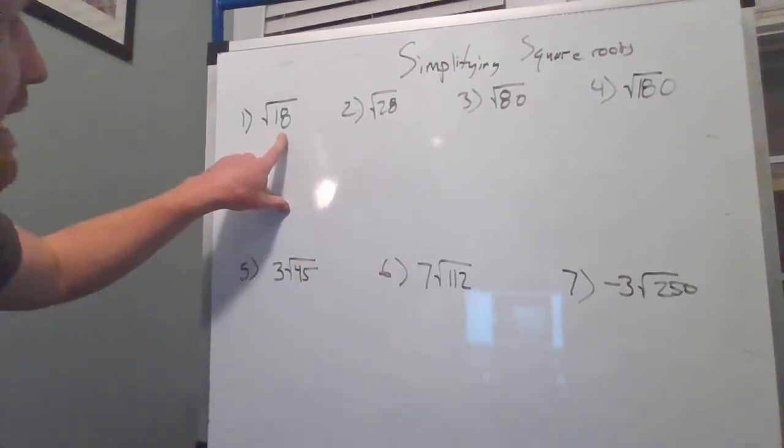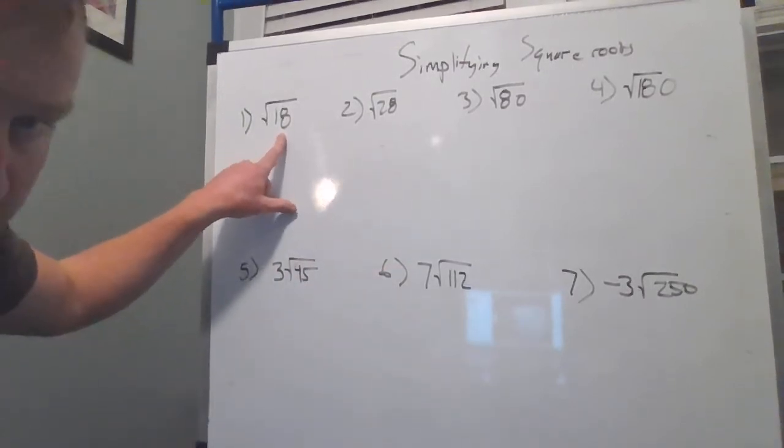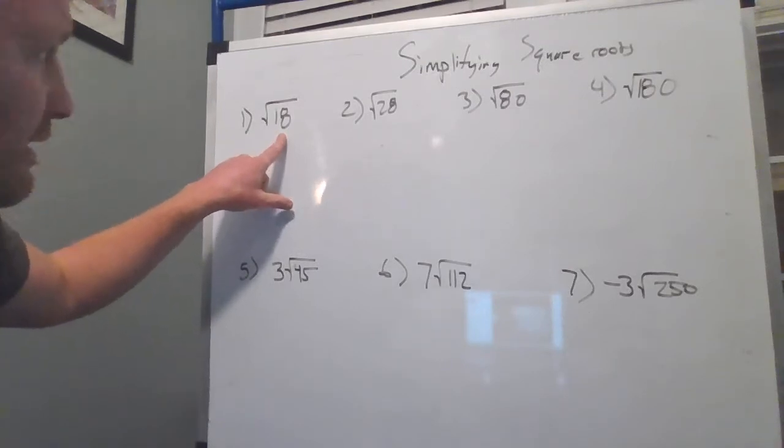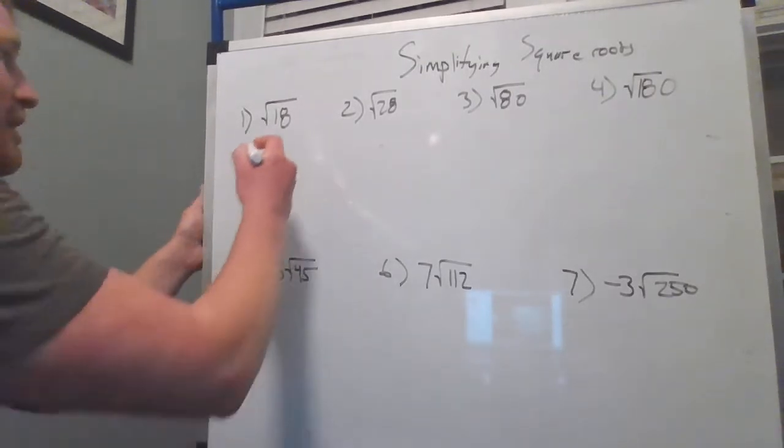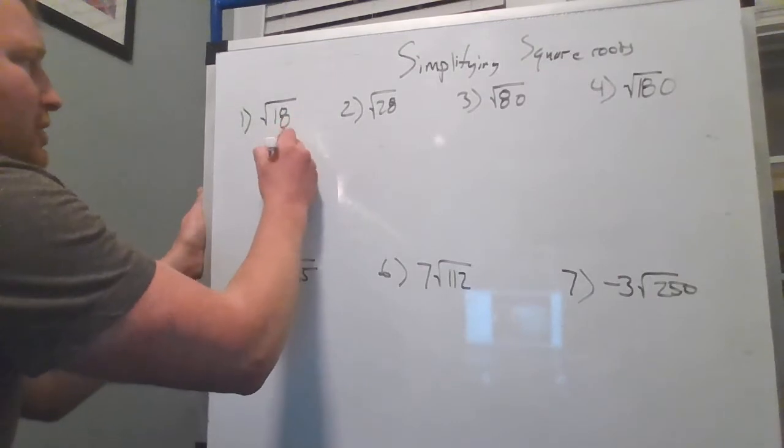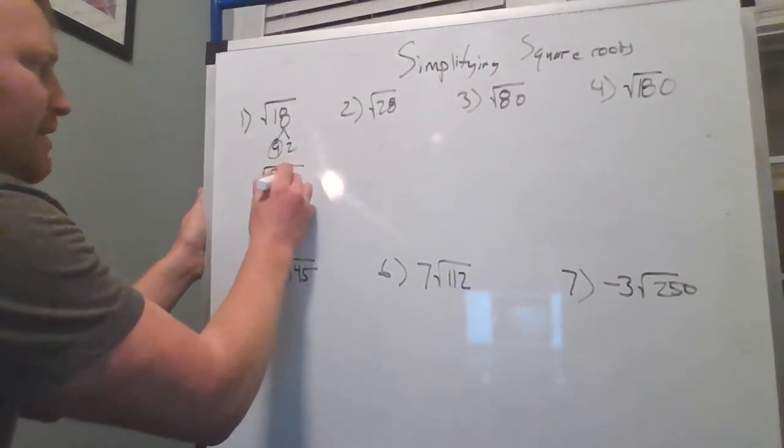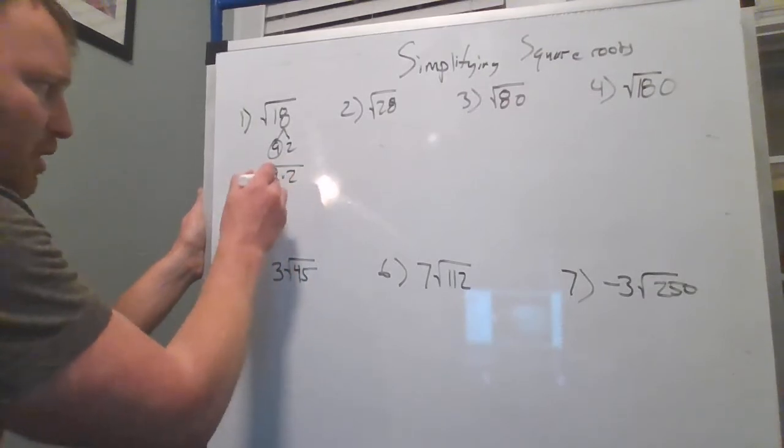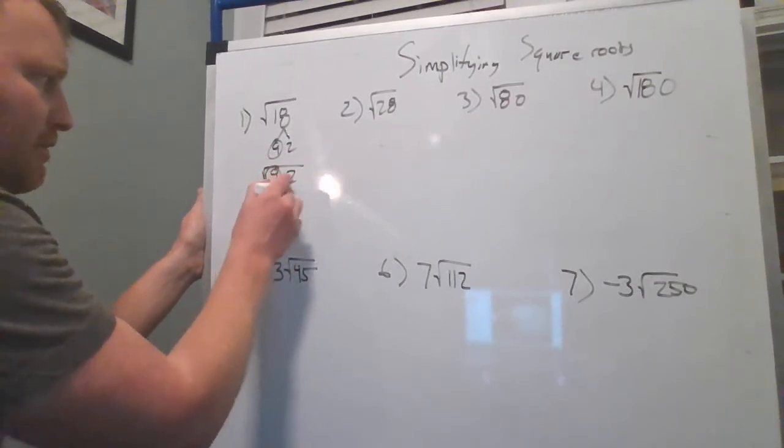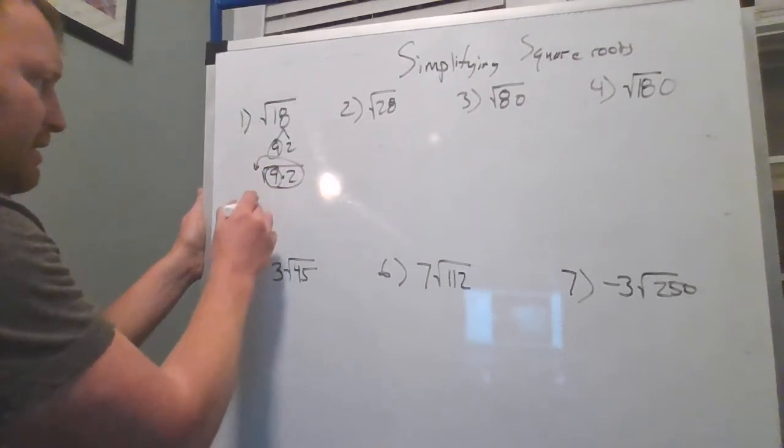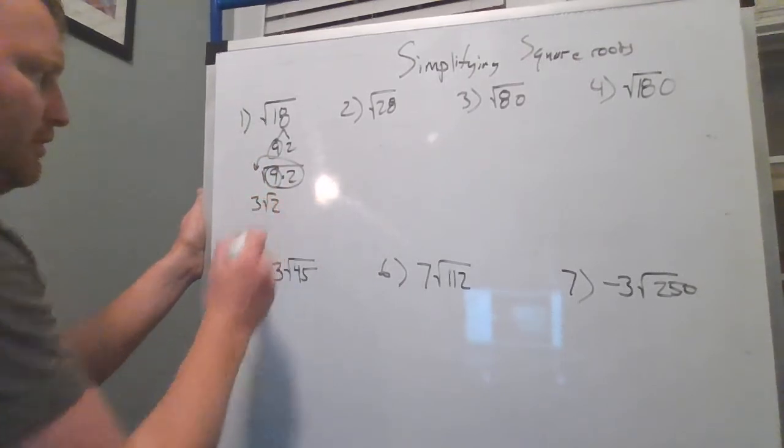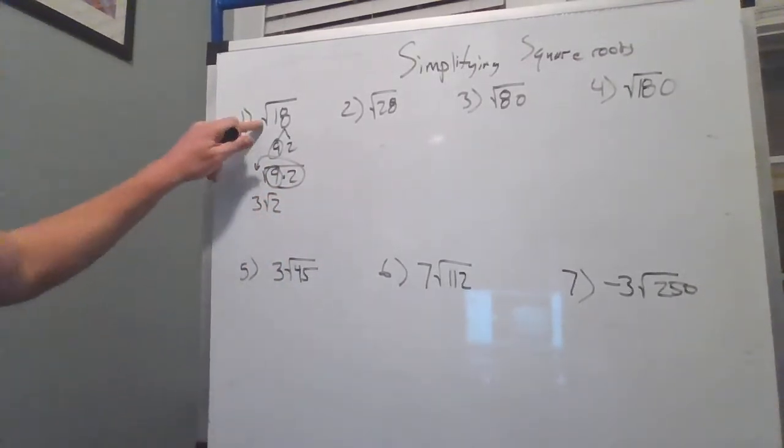So I don't want to use 6 or 3 as a factor of 18. I want to use 9 and 2 because 9 and 2, this one's a perfect square. Remember, this says the same as square root of 9 times 2, but the square root of 9 comes outside as a 3 radical 2. So square root of 18 simplifies to 3 radical 2.